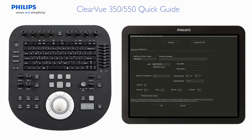When using an obstetrics preset, a trending graph can be generated for the current study, for studies saved on your system, and for studies saved to removable media. Trending data is dependent on entering a last menstrual period date, or a date of conception, or an estimated date of confinement.